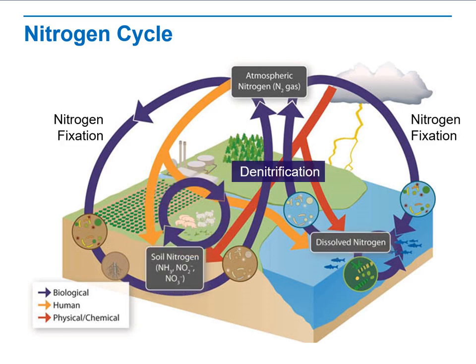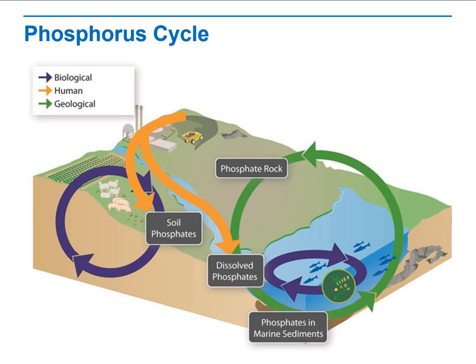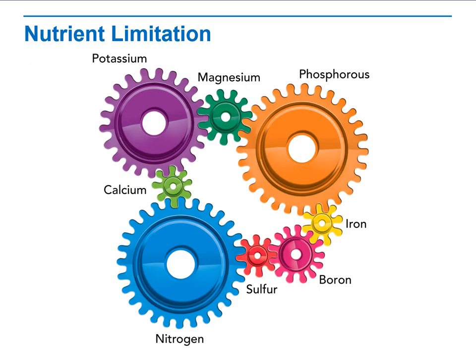We will also cover the phosphorus cycle, including its biological, human, physical, and chemical aspects, as phosphorus has its component inside our body. We will also go through the small amounts or smallest percentages of other molecules such as potassium, magnesium, phosphorus, calcium, sulfur, and iron, in addition to nitrogen.